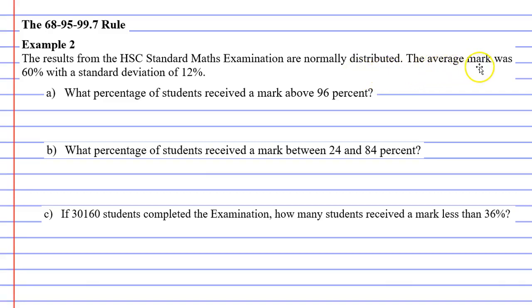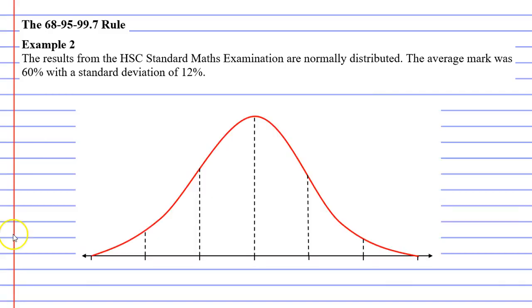The average mark was 60% with a standard deviation of 12%. Now we've got three questions here, A, B and C, but before we get into these questions, we need to bring up a picture of our bell curve. Here I have it, and we're going to start by labeling this bell curve before we can get into these questions.